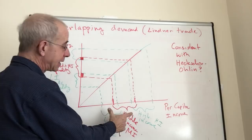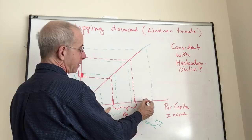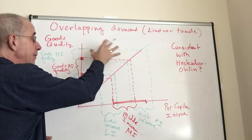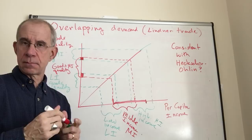The more that the middle income country is like the high income country, for example, if their range of income was higher, you would have more overlapping demand and more possibility of trading with the high income country.